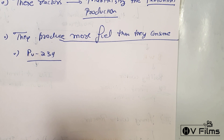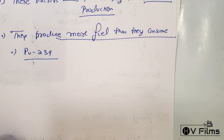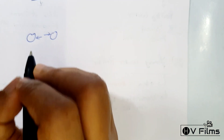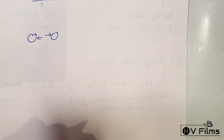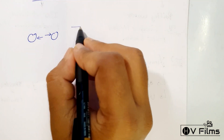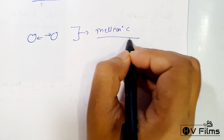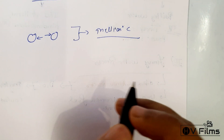A typical fusion reactor uses hydrogen as fuel, which is abundant in ocean water. However, the main problem is that hydrogen nuclei repel each other, requiring a huge amount of temperature and energy. The electric repulsion of the two hydrogen nuclei can be overcome by heating hydrogen to approximately one million degrees Celsius, which is what happens in a typical hydrogen bomb.